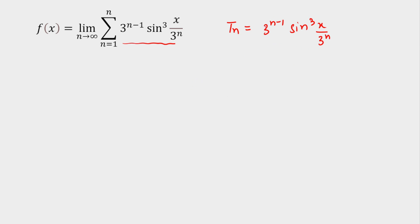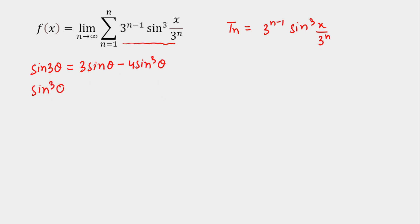Now we have to convert this into a difference of two terms so that we get a telescoping series. We use the identity for sine 3θ: sine 3θ equals 3 sine θ minus 4 sine³ θ. From this we can write sine³ θ as (3 sine θ − sine 3θ) divided by 4.